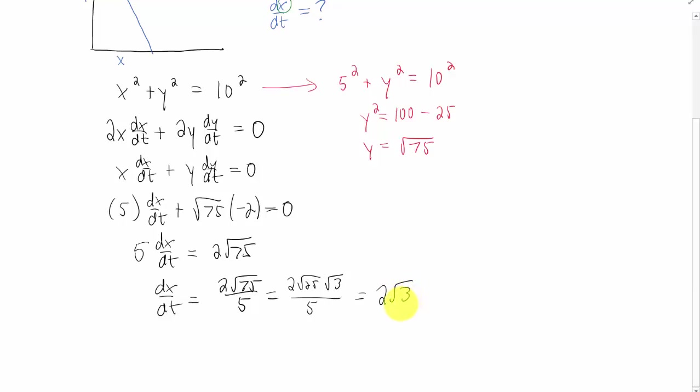This might be the simplified answer in the back of your book, but if you just want to use a calculator to get an approximation, the answer is going to be 3.46, and I believe that's feet per second. But I'm going to check those units.